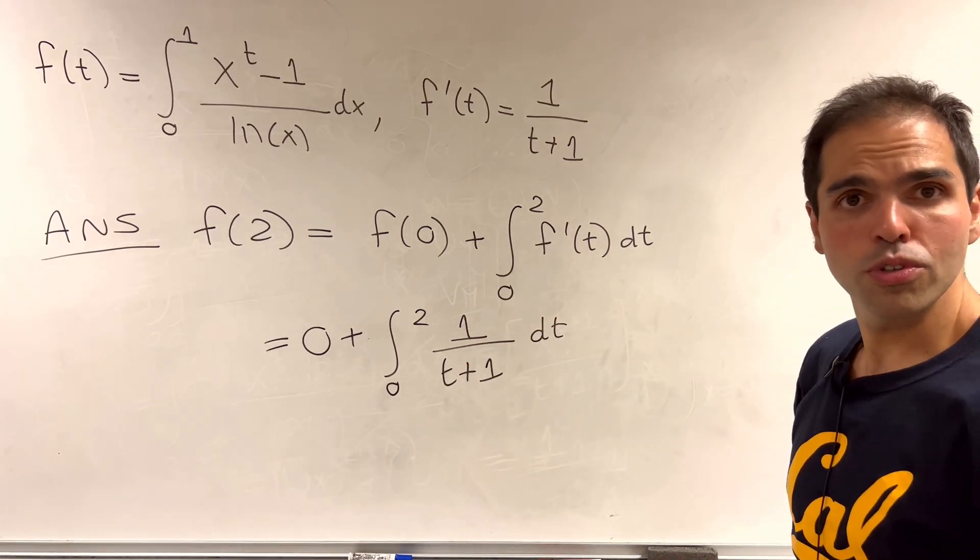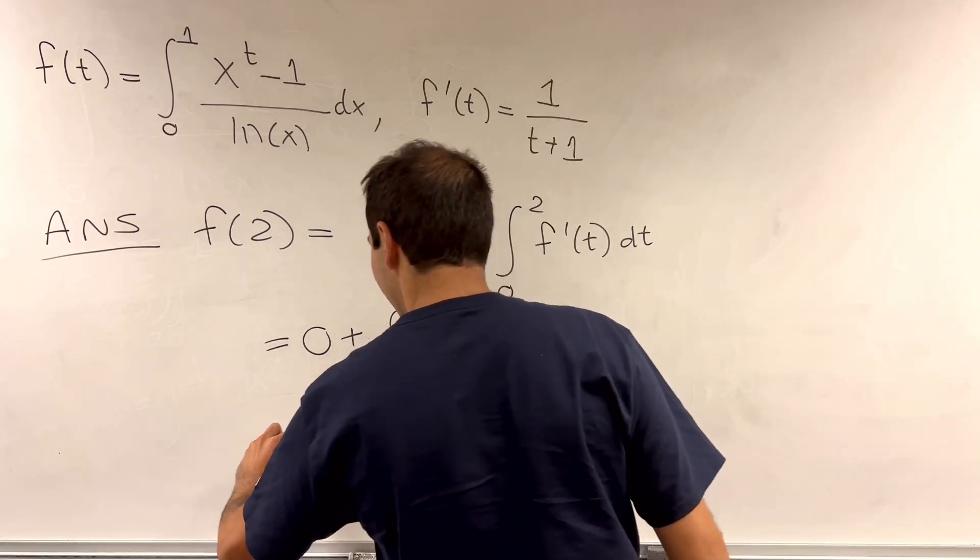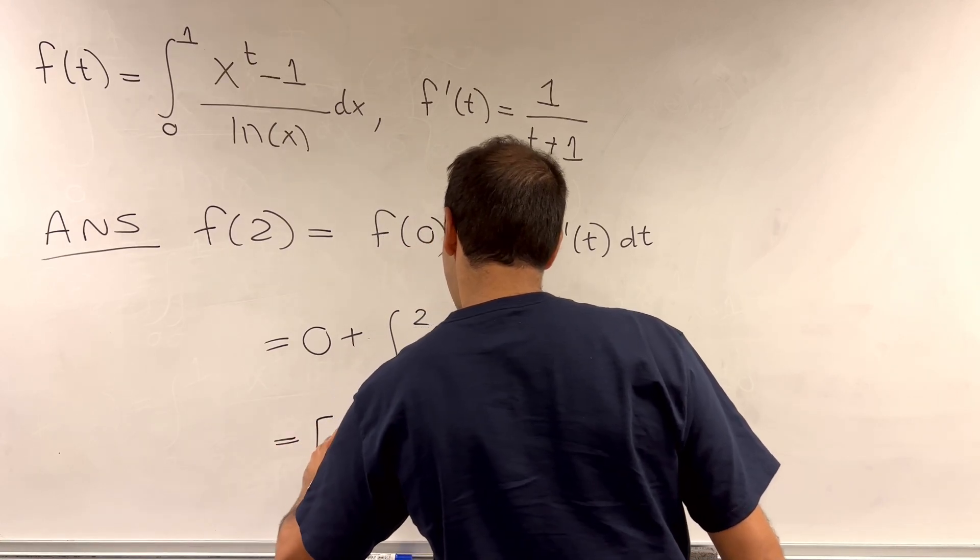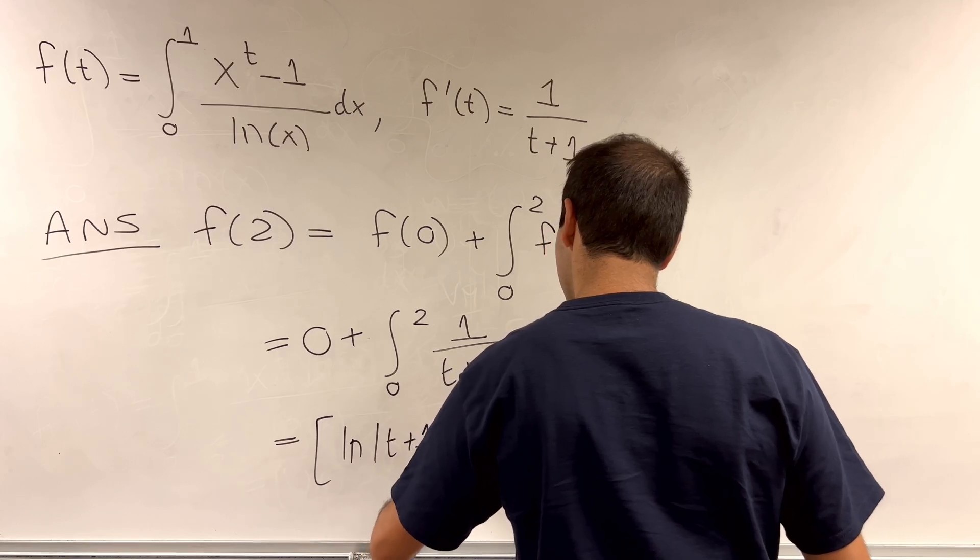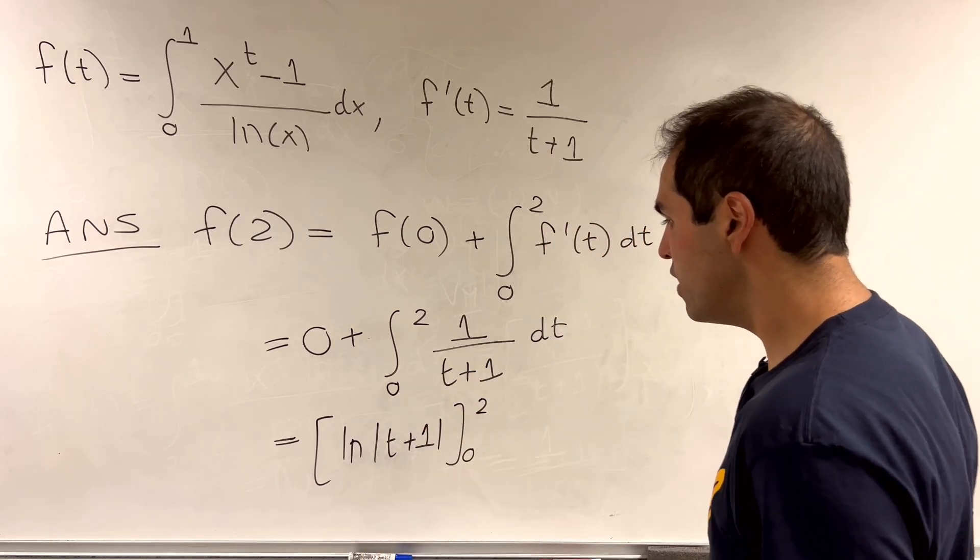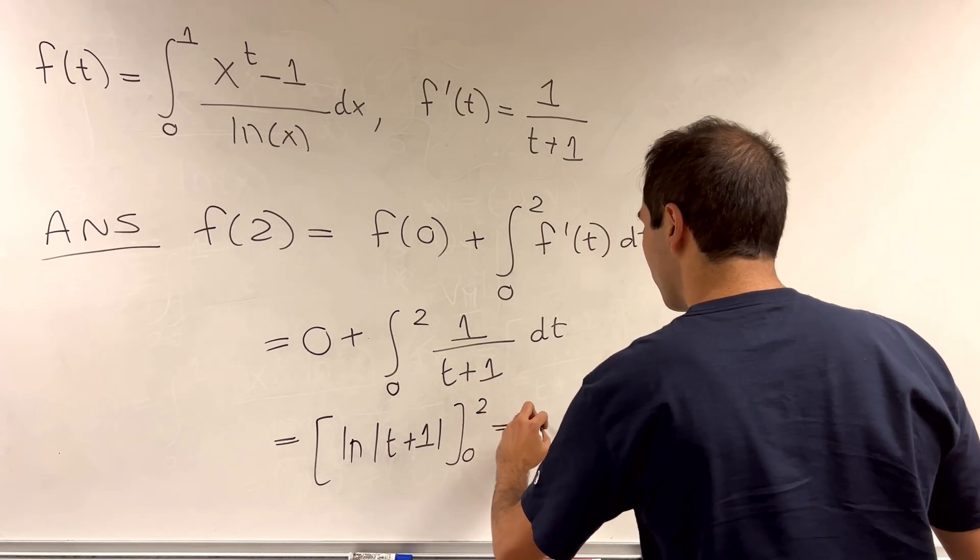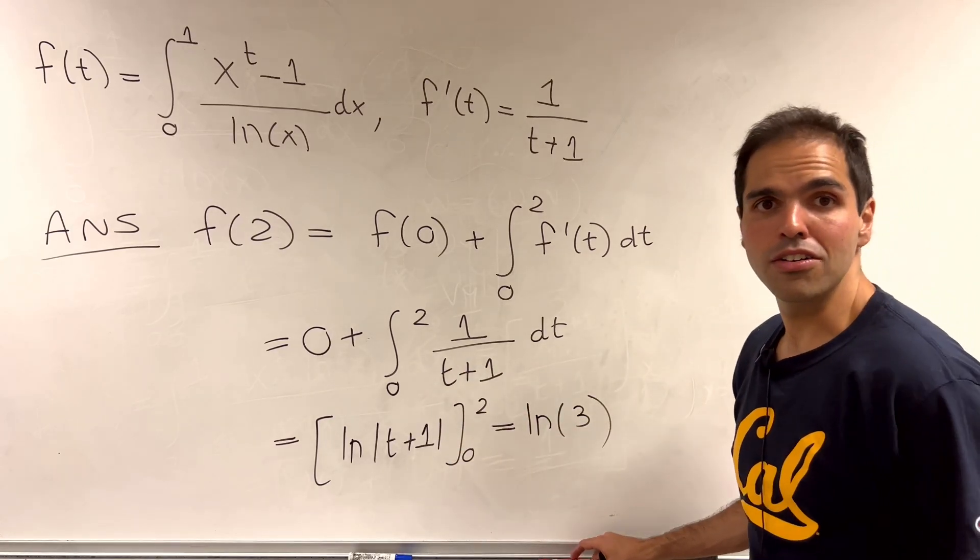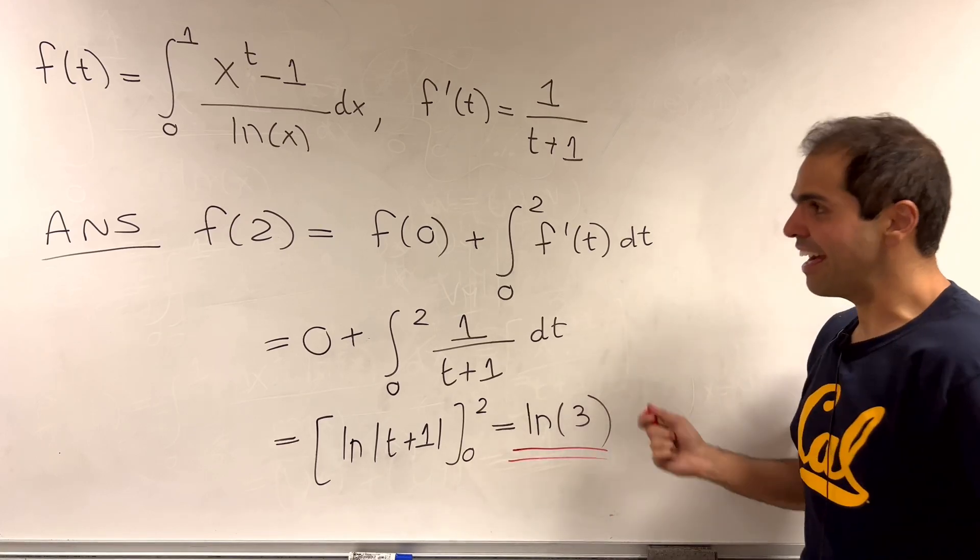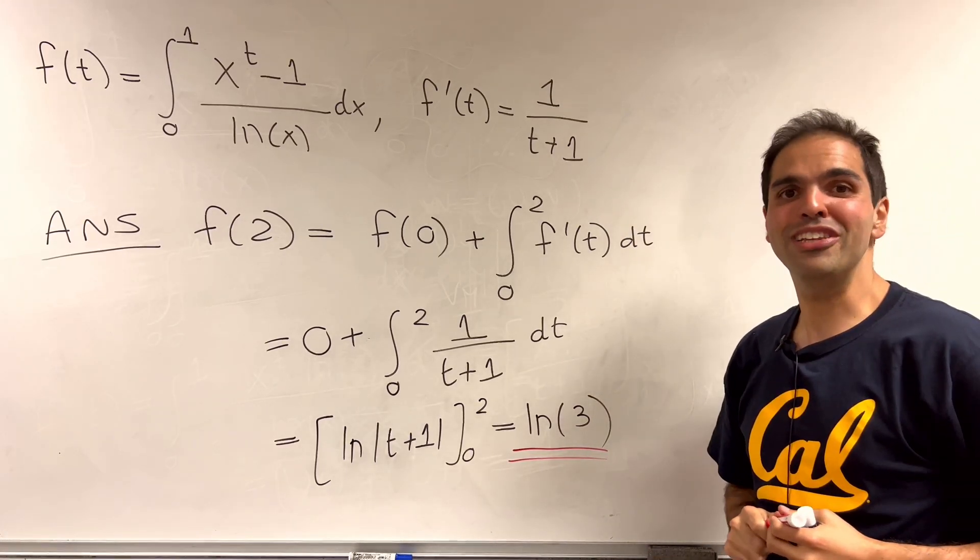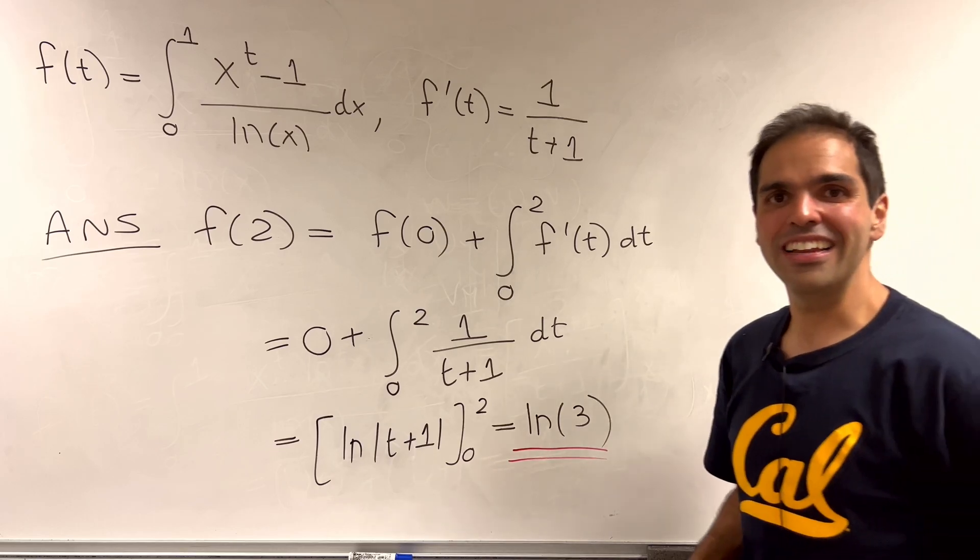But we can just evaluate this using ln. So this is ln of t plus 1 from 0 to 2, which becomes ln of 3 minus ln of 1, but ln of 1 is just 0. And so in the end, the answer to that Reddit integral is just ln of 3.